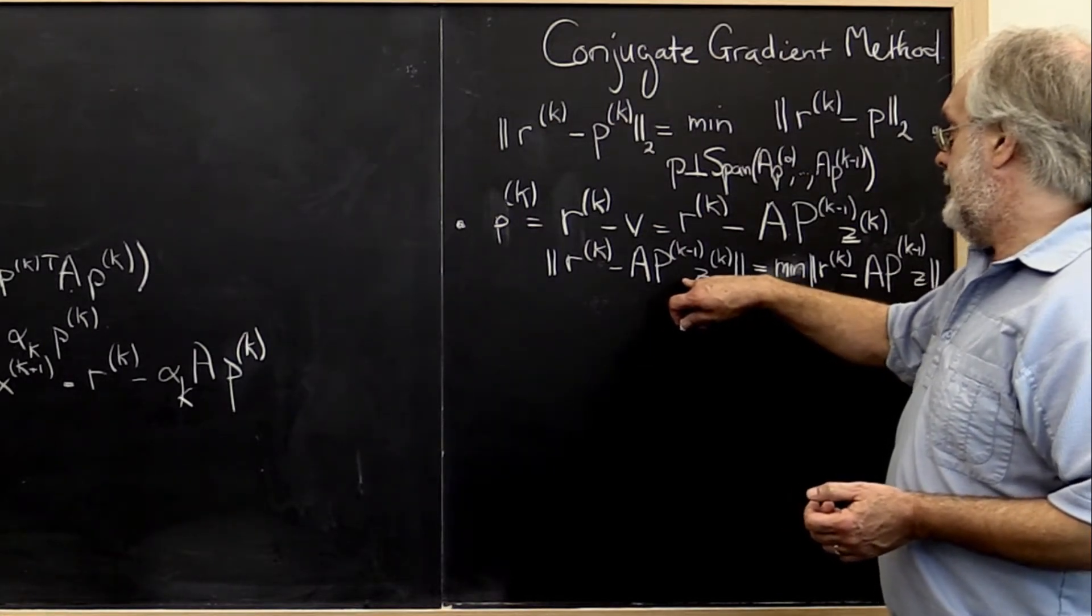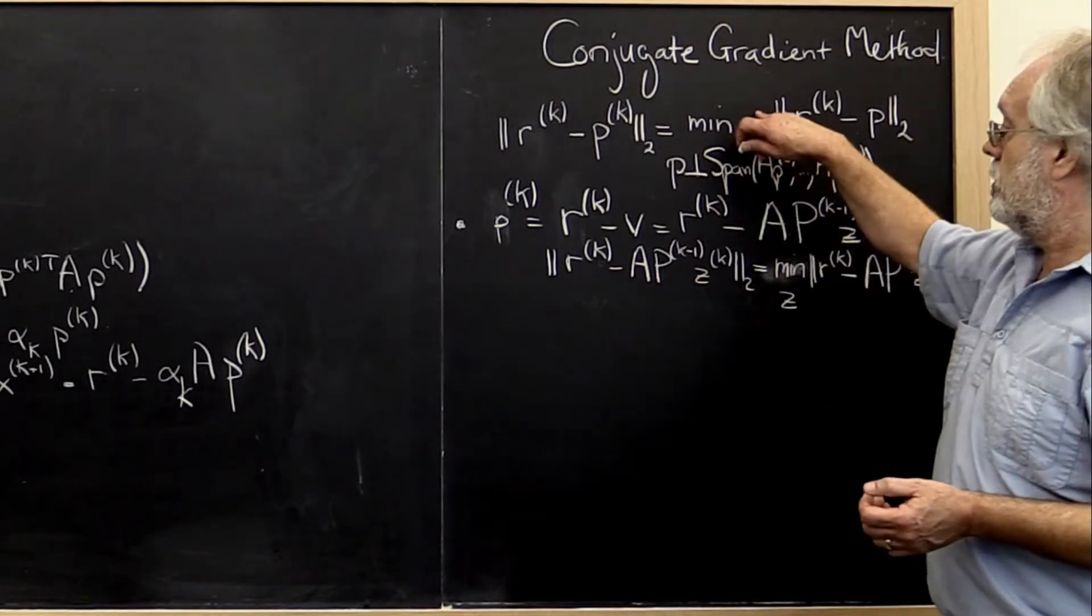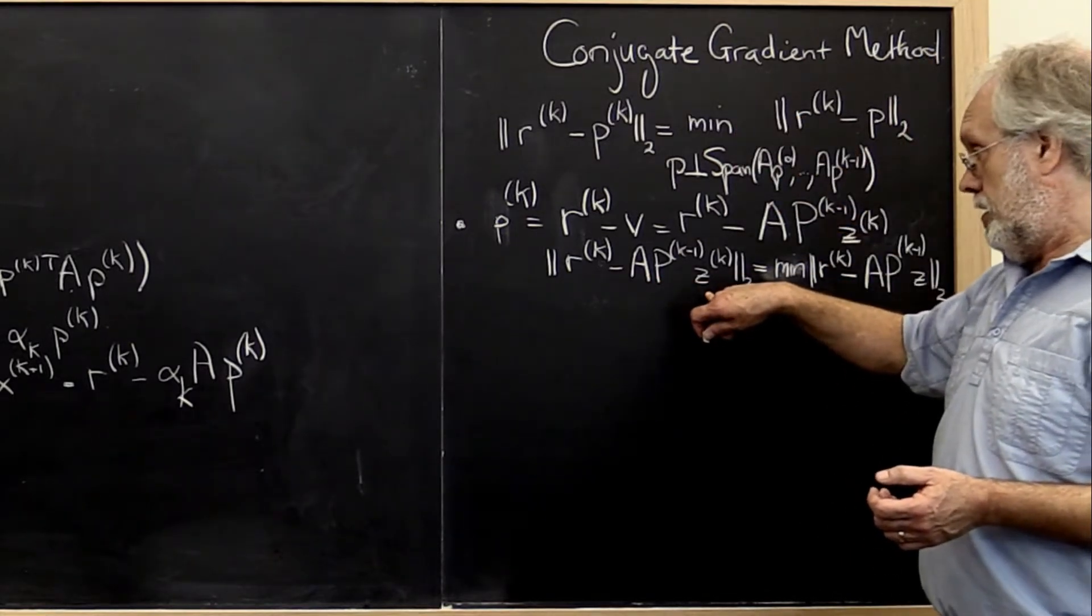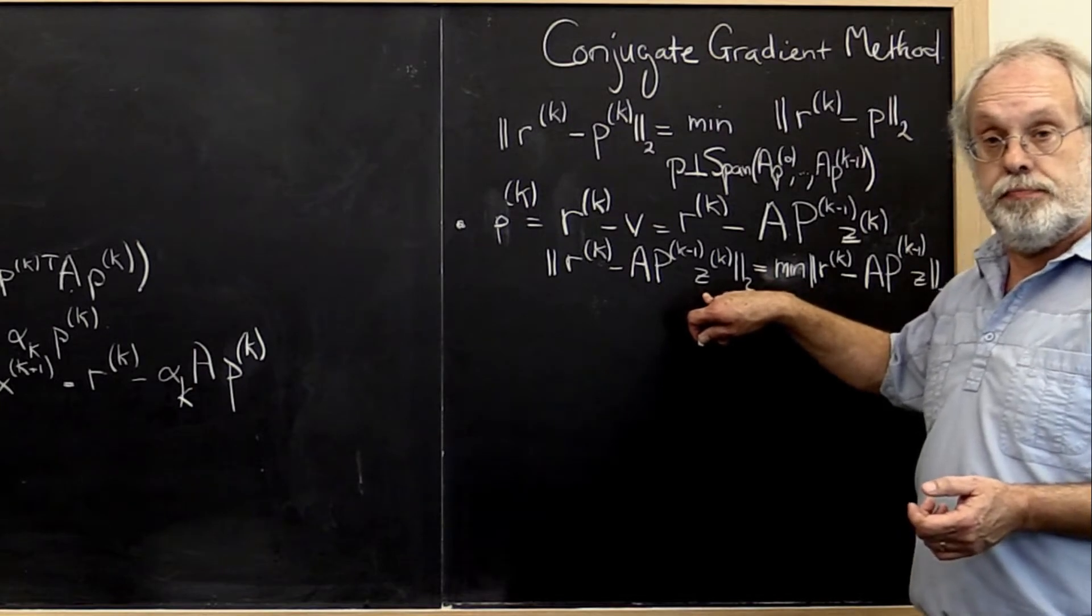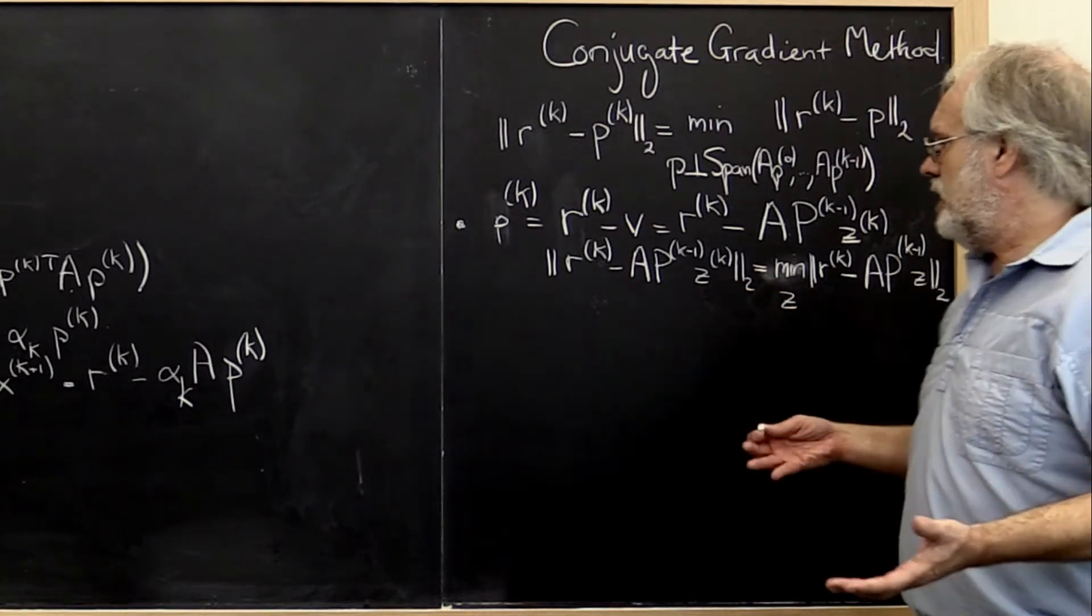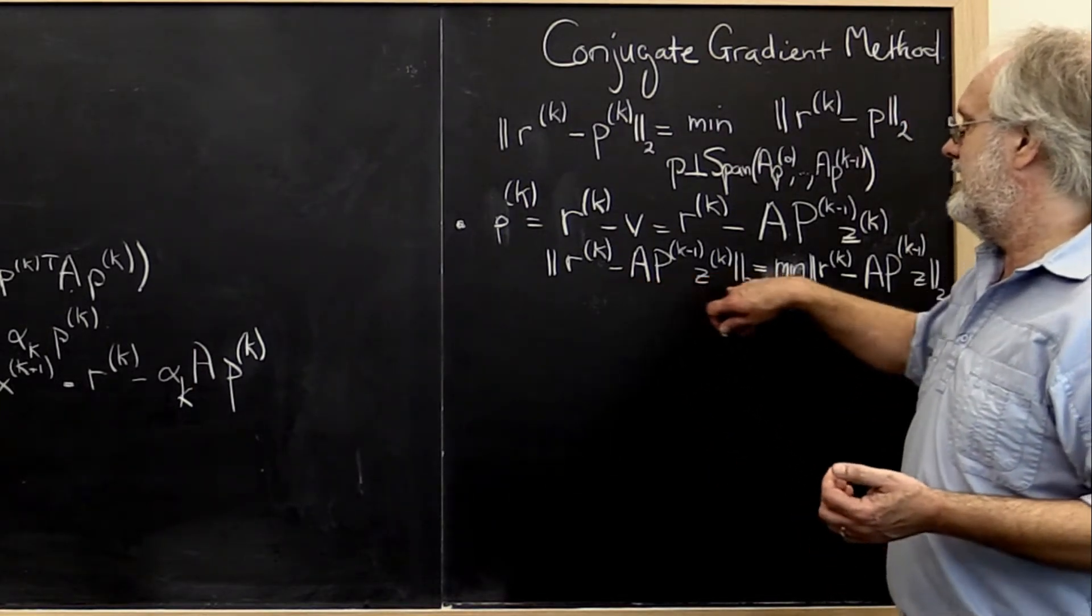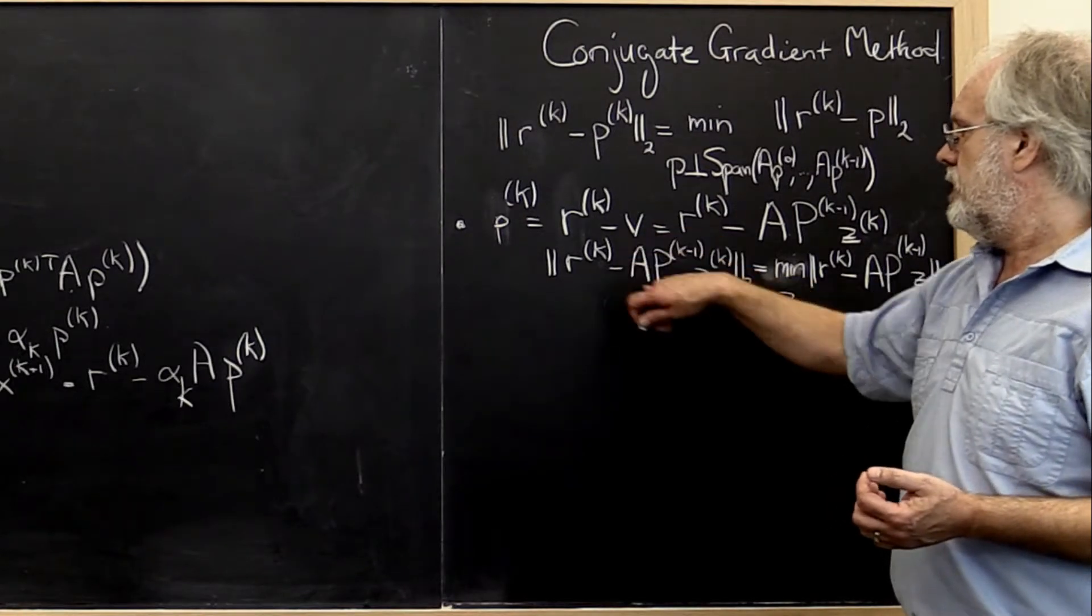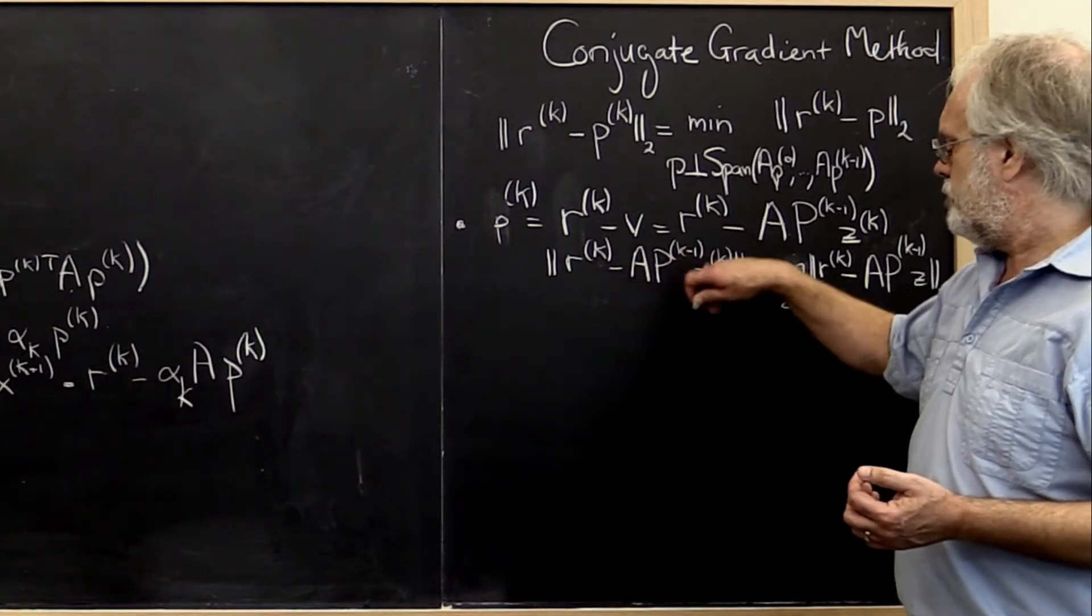because it changes our characterization into a linear least squares problem. But that doesn't really solve the problem because notice that this linear least squares problem involves a matrix.